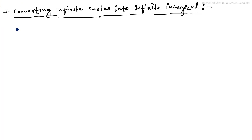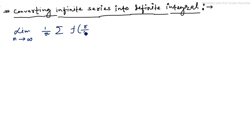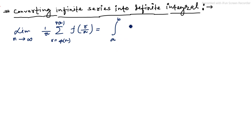Here, if we have a series as limit n tends to infinity of (1/n) × summation of f(r/n), where r goes from φ(n) to ψ(n), this equals the definite integral from a to b of f(x) dx, where a is the lower limit and b is the upper limit.